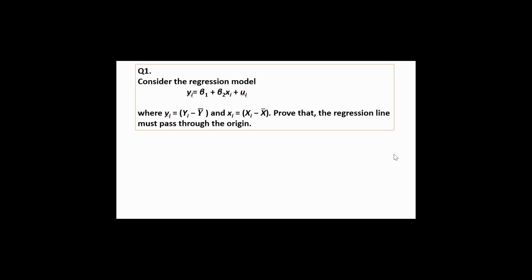This is Lenit Jorba speaking. Today we are going to solve this question which is taken from Gujarati's basic economics book. As the question is demanding, we have to prove that the regression line must pass through the origin, where yi is the small